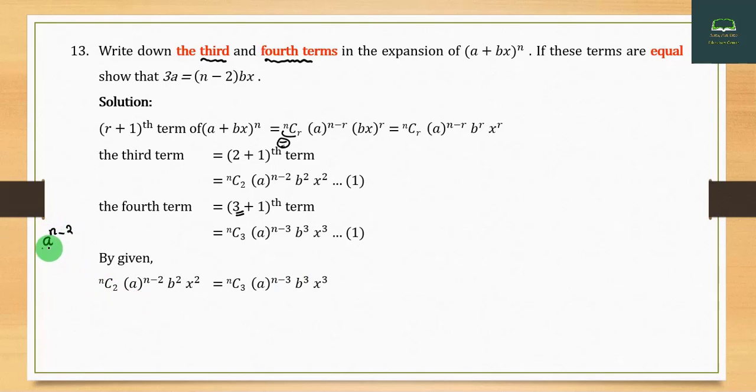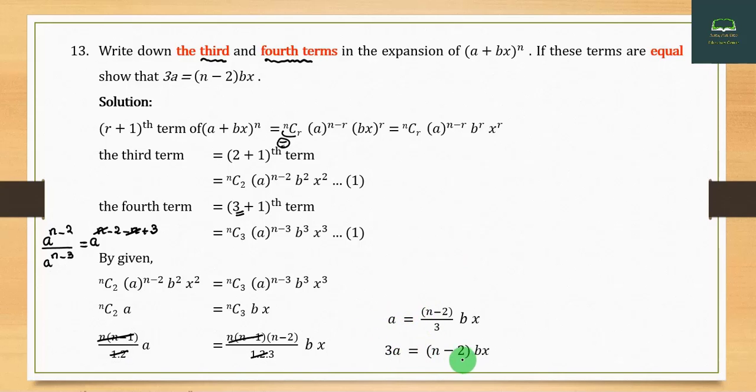By comparing coefficients: nC₂/nC₃ = b/a. This gives us [n(n-1)/2]/[n(n-1)(n-2)/6] = b/a. Simplifying: 3/(n-2) = b/a. Therefore 3a = (n-2)b, as required.